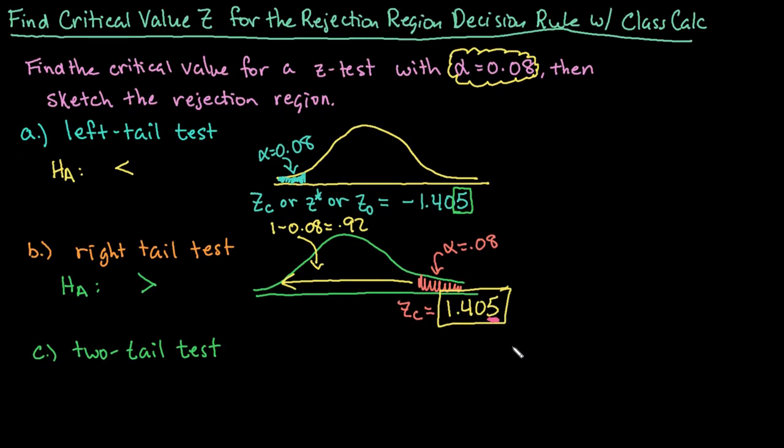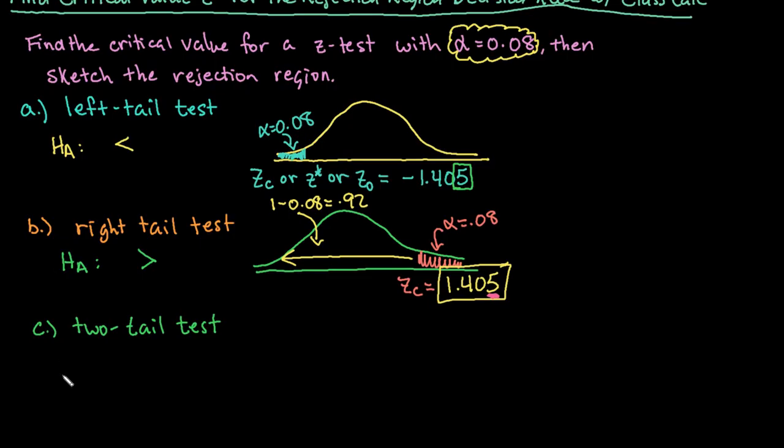And the last one that we want to look at is a two-tail test. A two-tail test happens when the alternative hypothesis is not equal to. So if I draw out my normal model to the best of my ability, I would shade both the left tail and the right tail. So this time we're going to have two critical values. It can either fall to the left of the negative z score or to the right of the positive z score in order to reject. And what's going to happen is our alpha is going to be split. So half of alpha would go here, so 0.04, and half of alpha would go here.